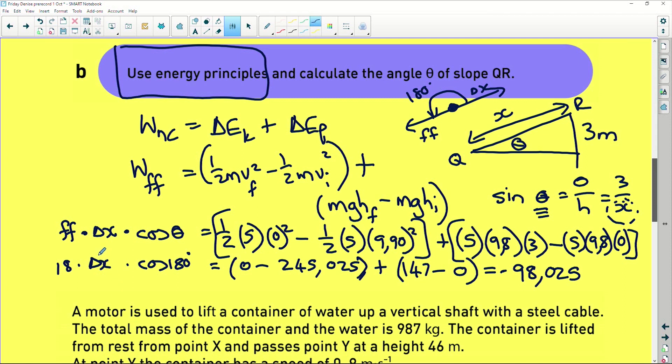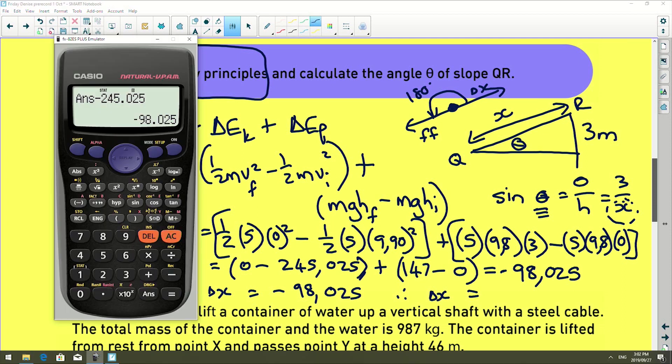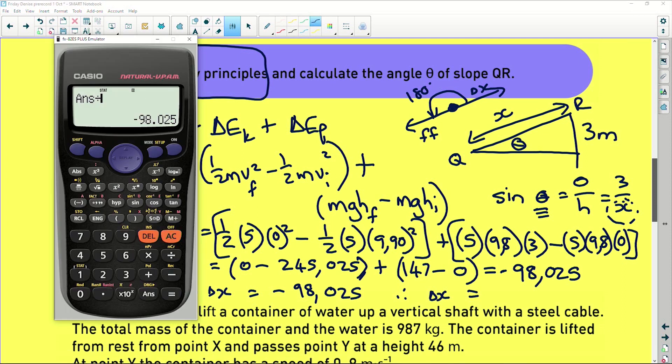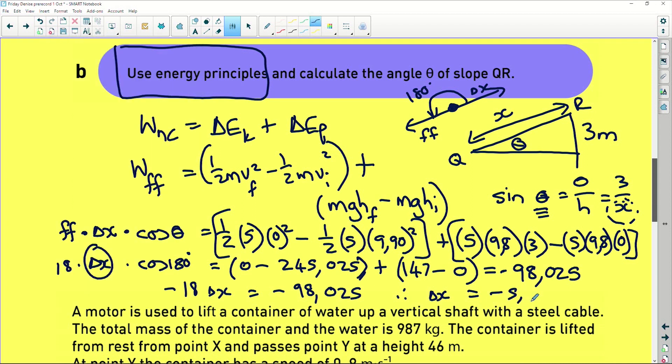So now we are trying to solve for delta x. Now cos of 180 is negative. So we've got minus 18 delta x equals minus 98.025. Therefore delta x is going to equal, that divided by 18 equals plus 5.44 meters. Now we've got the displacement, so now we need to go work out the angle.